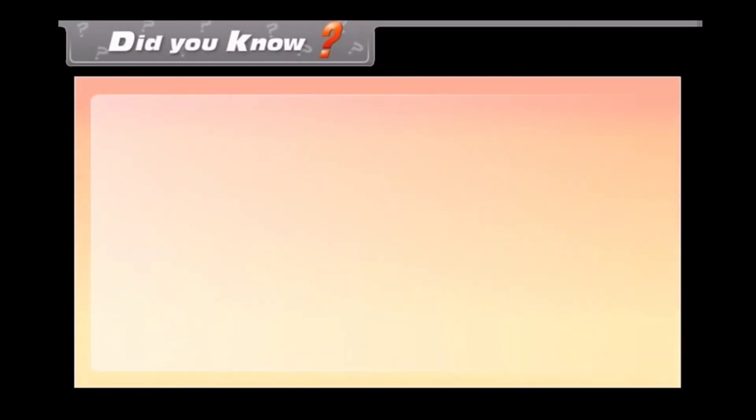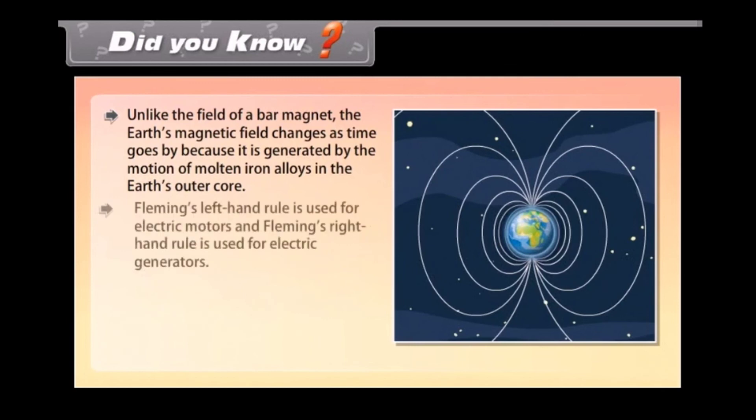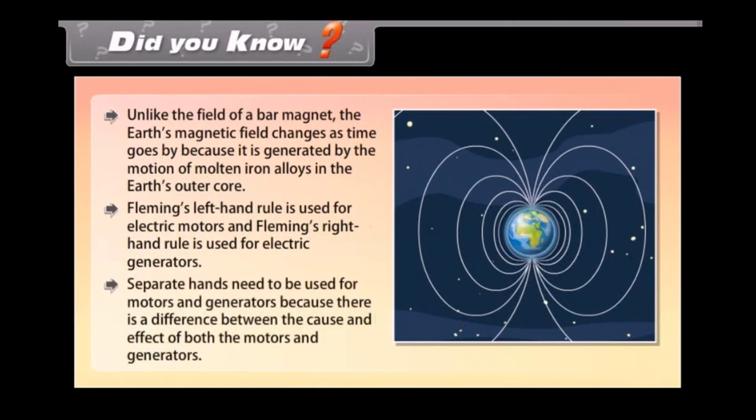Did you know? Unlike the field of a bar magnet, the earth's magnetic field changes as time goes by because it is generated by the motion of molten iron alloys in the earth's outer core. Fleming's left-hand rule is used for electric motors and Fleming's right-hand rule is used for electric generators. Separate hands need to be used for motors and generators because there is a difference between the cause and effect of both the motors and generators.